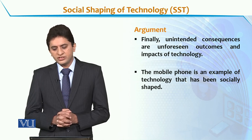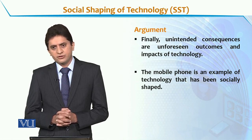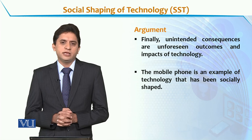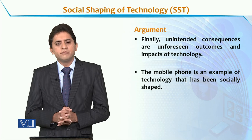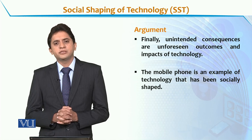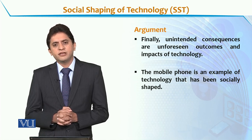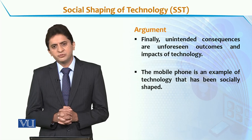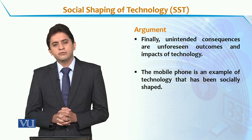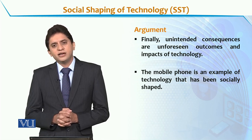Unintended consequences are the unforeseen outcomes and impacts of technology. For example, the internet, smartphones, and social media platforms have given us awareness and agency, but there are also negative outcomes. Cyberbullying — where social media platforms are used for bullying and blackmailing — is an example of an unintended consequence that was not foreseen when these technologies were developed.